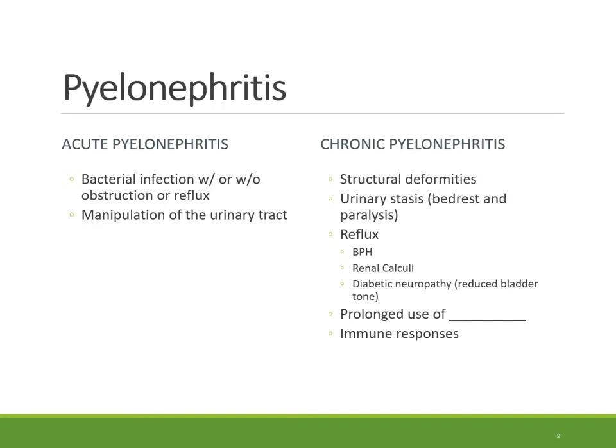We really need to separate pyelonephritis into two categories: acute pyelonephritis and chronic pyelonephritis. In acute pyelonephritis, there is acute tissue inflammation, which causes tubular cell necrosis and possible abscess formation. These pockets can form anywhere in the kidney, and healthy tissue can be right next to unhealthy tissue.